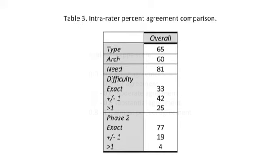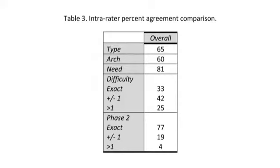What we found was that intra-rater agreement, which is based on the results from the duplicated subjects within the sample, showed that overall the raters were consistent with themselves 65% of the time when determining the type of malocclusion the subject possessed, 60% of the time when deciding which arch was at fault, and 81% of the time when determining the need for immediate orthodontic treatment.